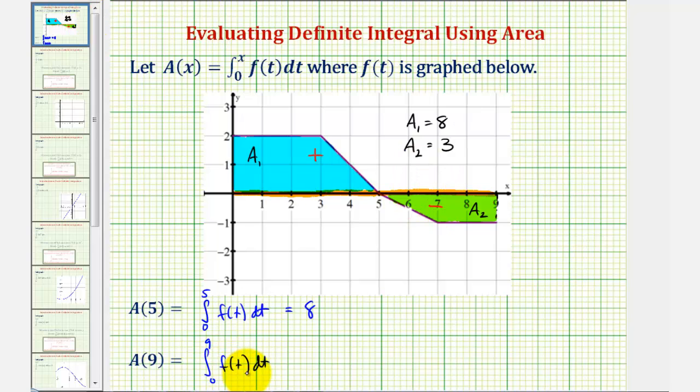Which means the integral of f(t) from zero to nine would be equal to positive eight, and then plus a negative three, or just minus three, which would give us five.